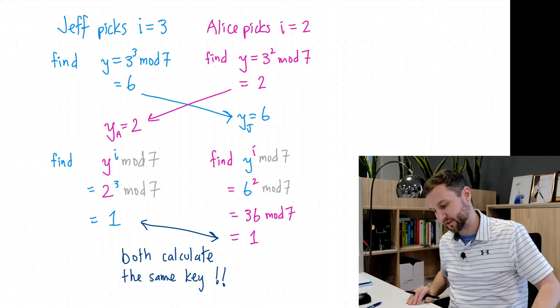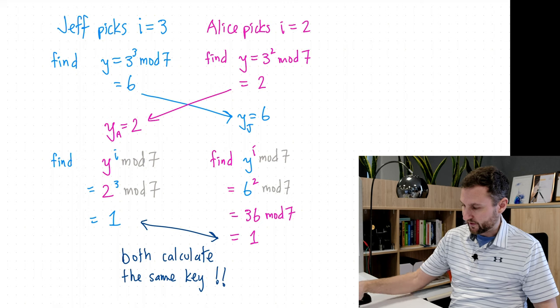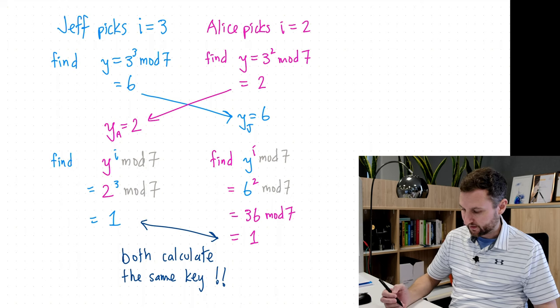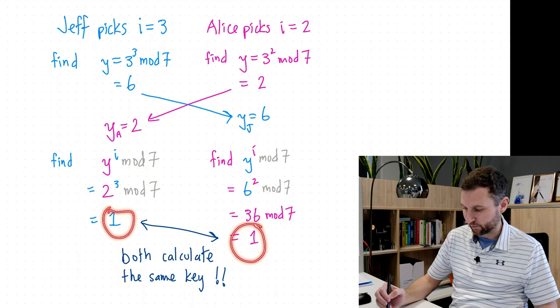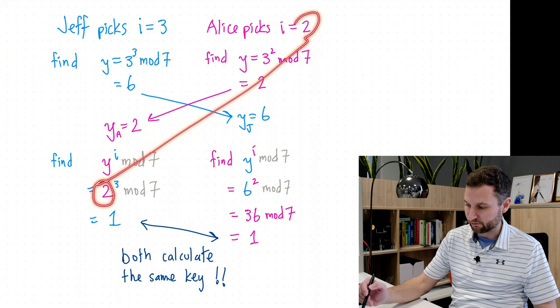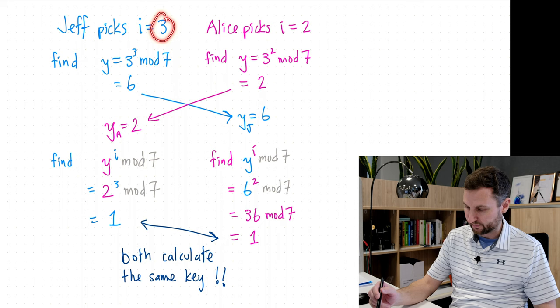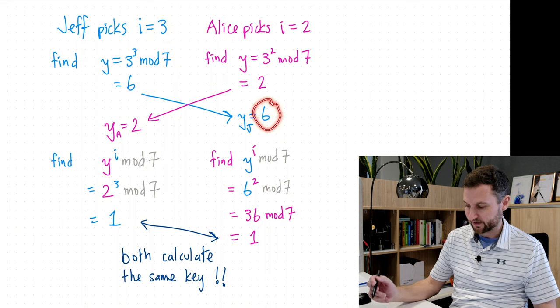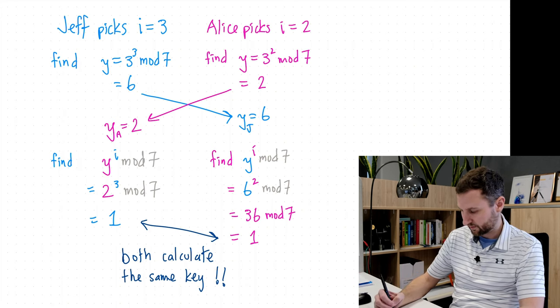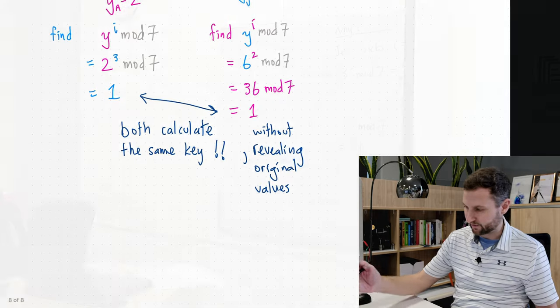We have both calculated now the same secret value that we can use then to proceed with our encryption. And some exclamation points for emphasis, right? So using this modular arithmetic, and some clever features about the discrete log here, we've both been able to calculate the same key. And again, so we now have shared information of 1, but Jeff, myself, I used Alice's 2, but I didn't know the original value Alice picked. That was just coincidence. And Alice didn't know that I picked originally 3 because I sent her a 6. So I also didn't reveal any private information in this exchange without revealing my original values.